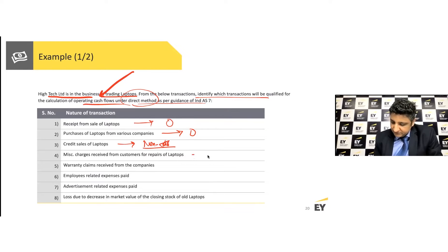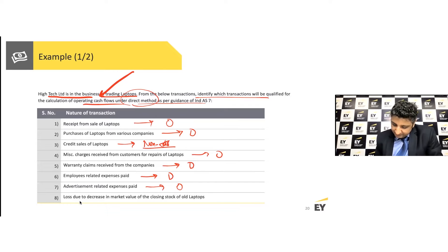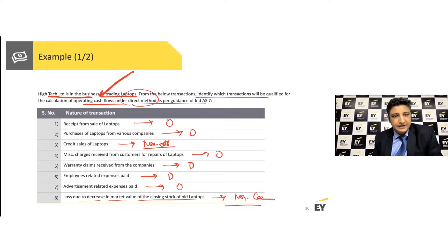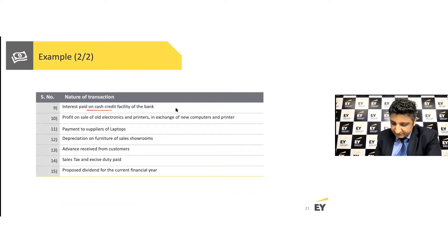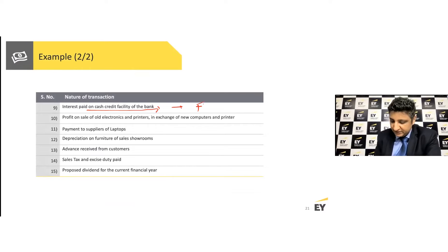Charges received from customers for repairs of laptops — operating activities. Warranty claims received from companies — also operations. Employee-related expenses and advertisement expenses — operating. A loss due to reduction in the market value of closing inventory is a non-cash item and is excluded. Interest paid on cash credit facilities is essentially a financing activity, not operations. Profit on sale of old computers exchanged for new computers involves no cash, so it is excluded.